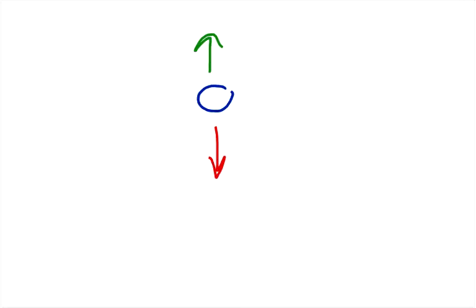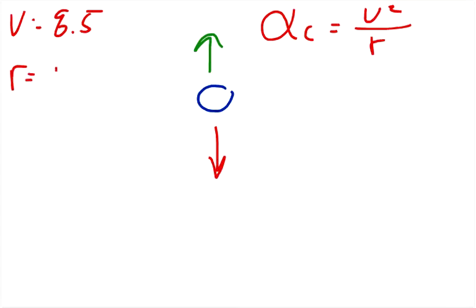And so this force that we have pulling up is actually the centripetal force. So we can actually write that out as the velocity squared over the radius. And the problem actually gives us the velocity at this point equals 8.5 meters per second. And it also gives us how long the vine is, which is going to be equal to the radius. The vine is 11 meters long.